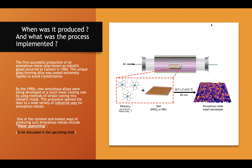When was it produced and what was the process implemented? The first successful production of Amorphous Metal occurred at Caltech in 1960. This unique glass-forming alloy was cooled extremely rapidly to avoid crystallization. By the 1990s, new amorphous alloys were being developed at a much lower cooling rate using methods of simple casting into metallic molds. One of the common and easiest ways of producing amorphous metals includes water quenching.